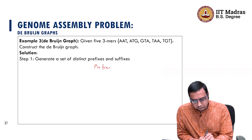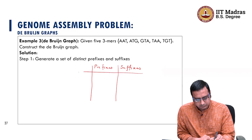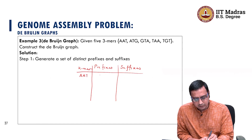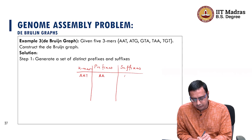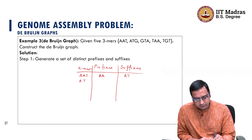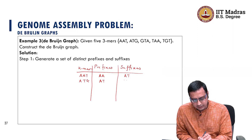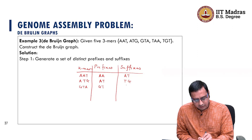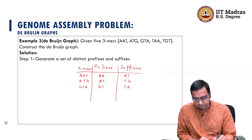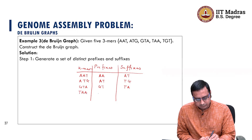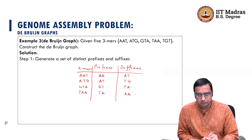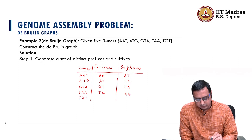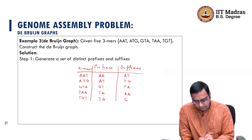We are going to compute the prefix and suffix for each K-mer. Applying the prefix function to AAT gives us AA as a prefix and AT as a suffix. Similarly, ATG has prefix AT and suffix TG. GTA has prefix GT and suffix TA. TAA has prefix TA and suffix AA. TGT has prefix TG and suffix GT.